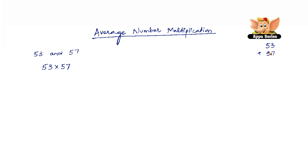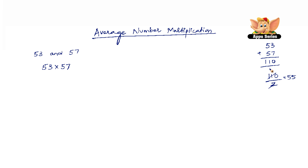53 plus 57 is 110. So 110 divided by 2 gives us the average between 53 and 57, which is 55. So now, how do we use this 55 to make multiplication simpler?